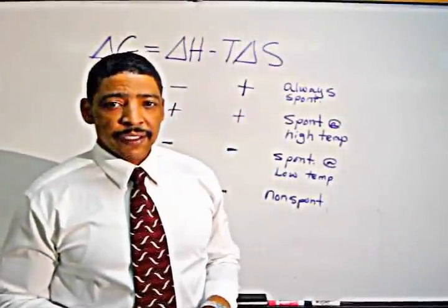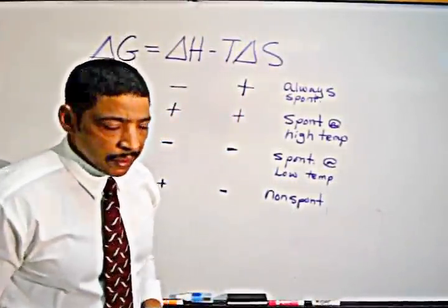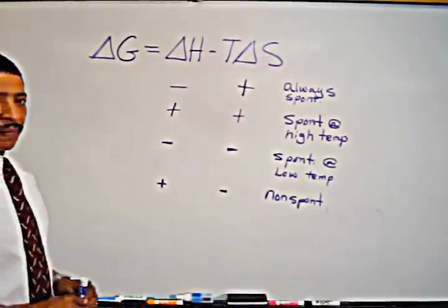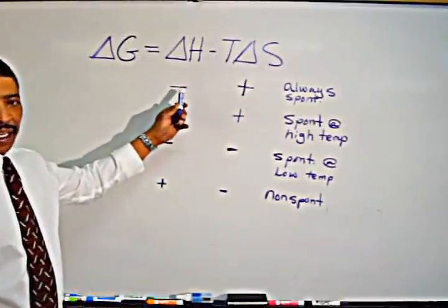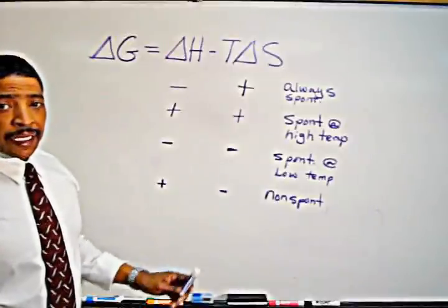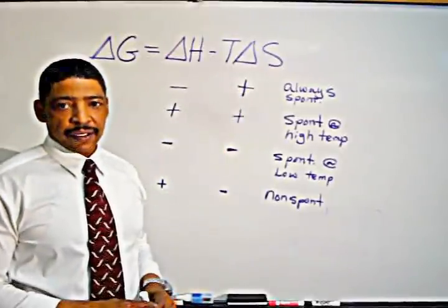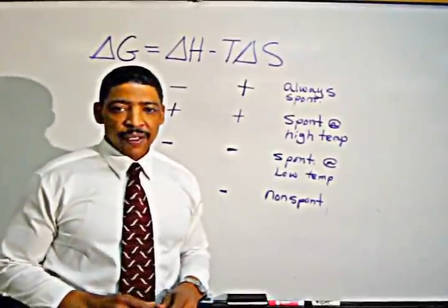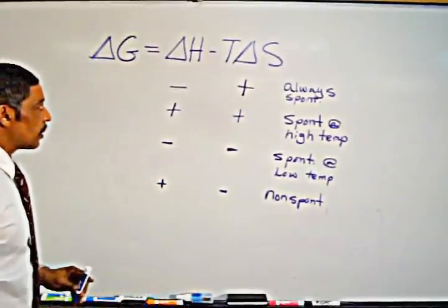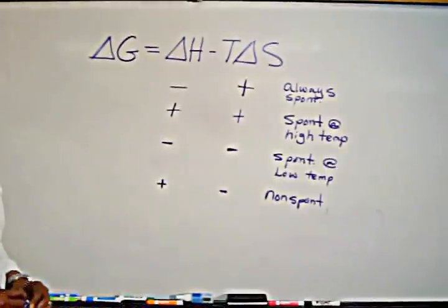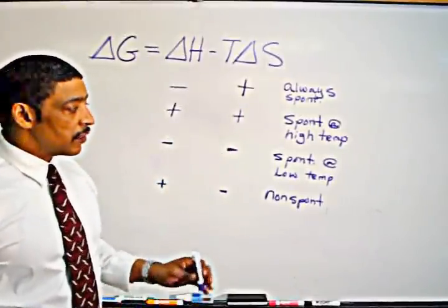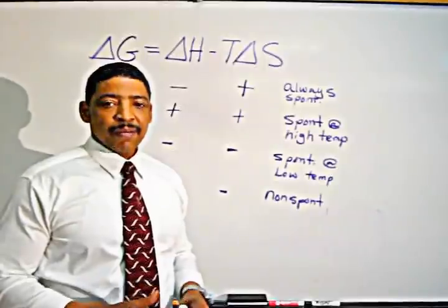Now let's try the concepts of enthalpy and entropy together in the Gibbs Free Energy equation. In general, if the delta H of a reaction is negative or exothermic, and the entropy of a reaction is positive, or if T delta S is positive, that reaction will always be spontaneous. If the delta H is positive or endothermic and the T delta S, or entropy, is also positive, then this reaction is spontaneous but only at a high temperature.